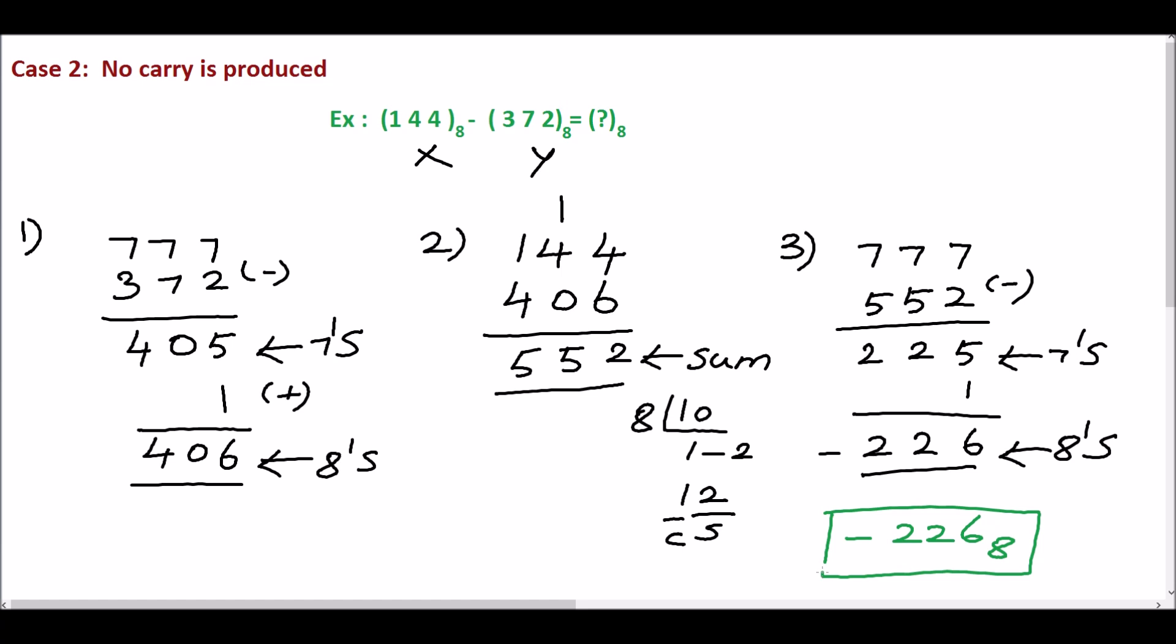We will summarize the step. First, find the 8th complement for the subtrahend. Then add the first number and the 8th complement of the subtrahend. If carry is generated in the addition, discard the carry. Otherwise, take the 8th complement for the sum and assign the negative sign. Thank you.